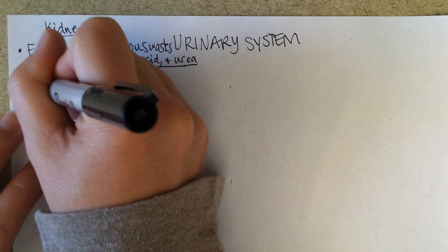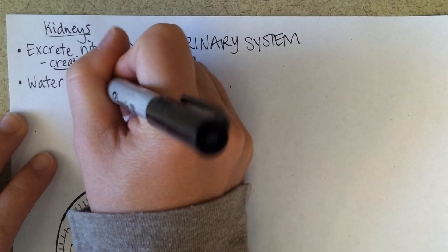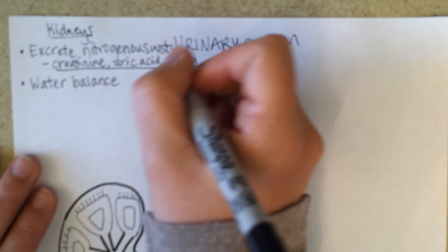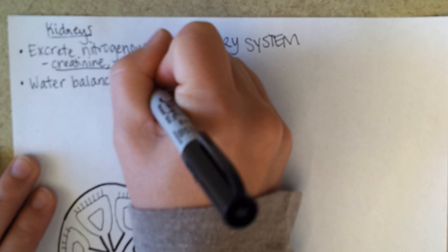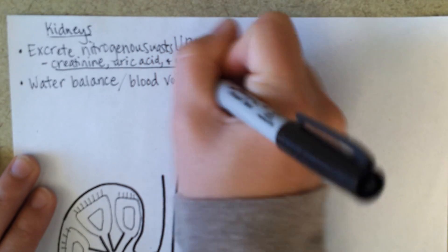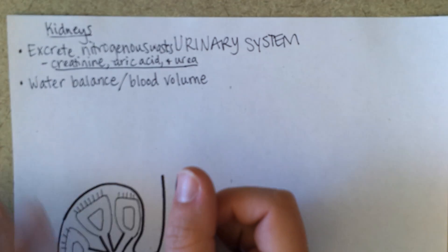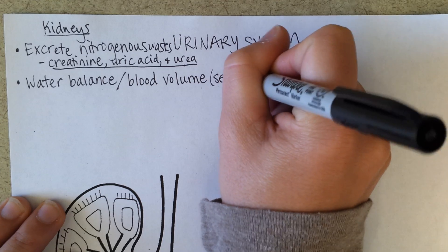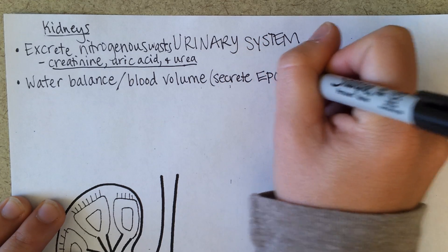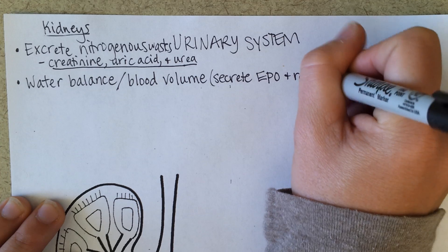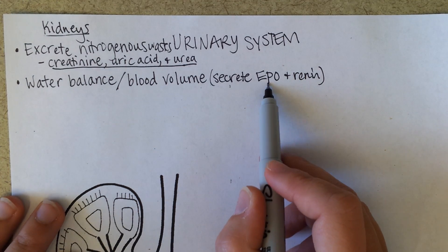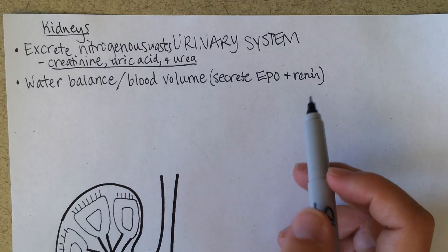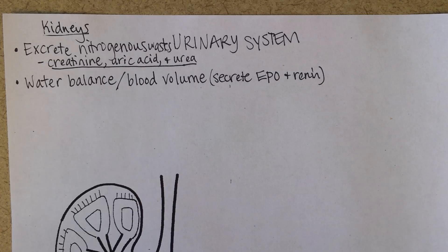The kidneys are a key organ for water balance in regulating and maintaining blood volume. For example, they secrete the hormone EPO and renin. EPO is going to increase erythrocytes. Renin is going to cause the formation of angiotensin II so that you can increase blood pressure as needed.